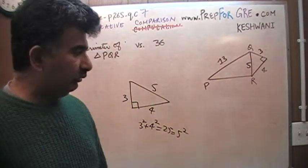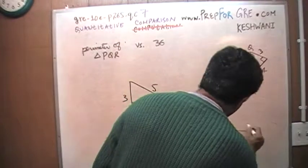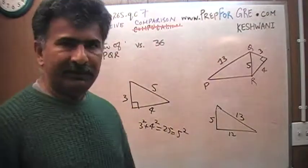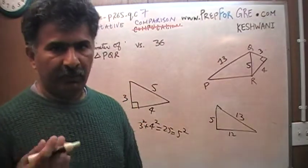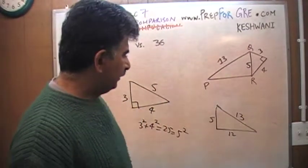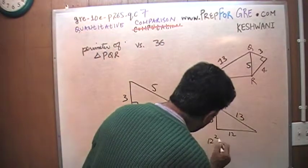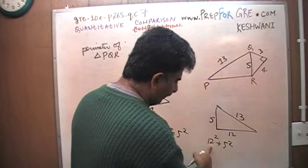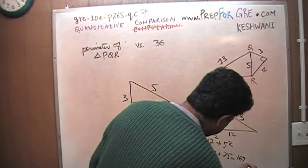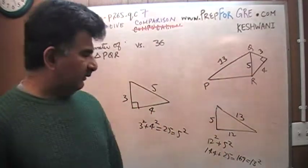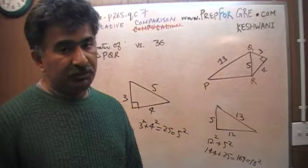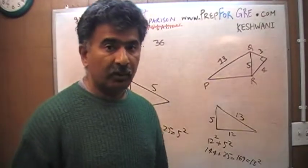Another triangle that you should know for the exam is this one. By the way, these are the only two triangles that you have to worry about as far as whole integers are concerned. You should know by heart. These are very handy triangles. Again, you will notice that this is 12 and this is 5. 12 squared is 144, 5 squared is 25, and therefore it adds up to 169.